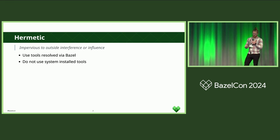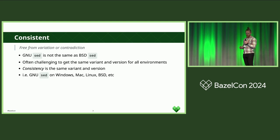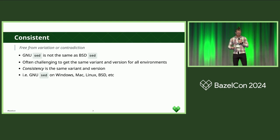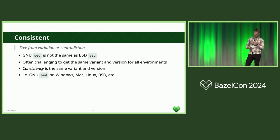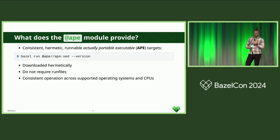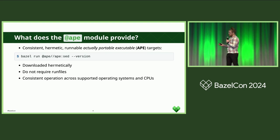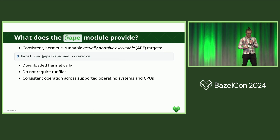The second part is hermeticity, but we also want consistency. GNU sed is not the same as BSD sed, and we want consistent execution across all our environments — on Windows, Linux, Mac, and even BSD. So what does the APE module provide? APE brings hermetic, runnable, actually portable, executable APE targets.